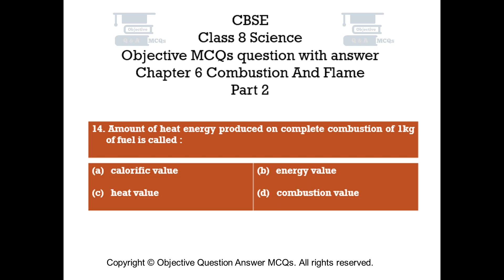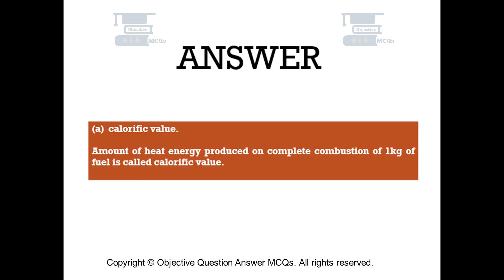Question number 14. Amount of heat energy produced on complete combustion of 1 kilogram of fuel is called: Option A, calorific value. Option B, energy value. Option C, heat value. Option D, combustion value. The right answer is Option A. The amount of heat energy produced on complete combustion of 1 kilogram of fuel is called calorific value.